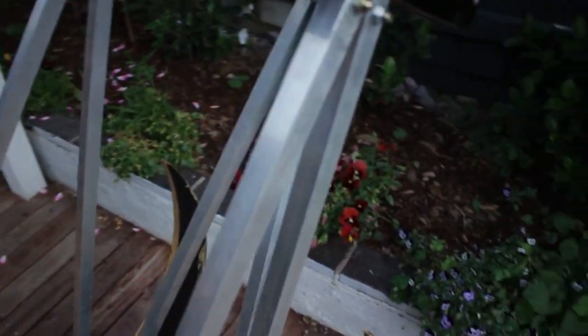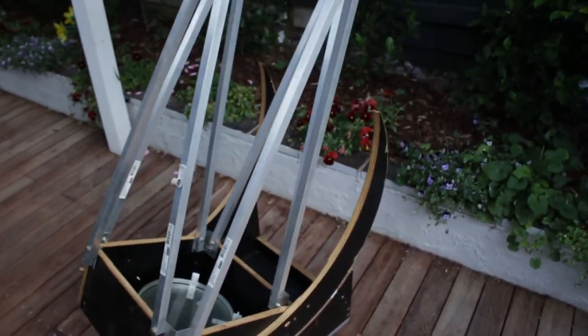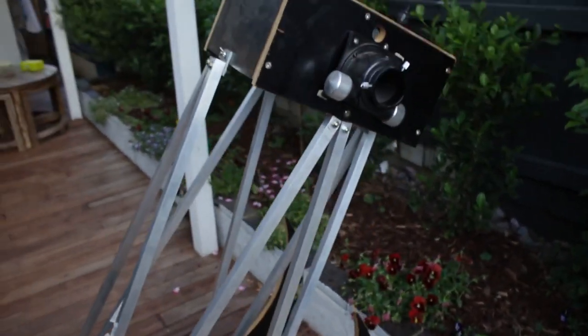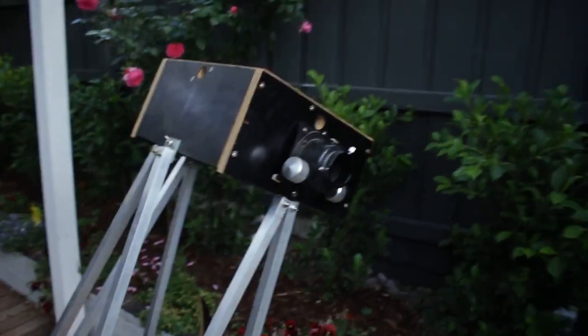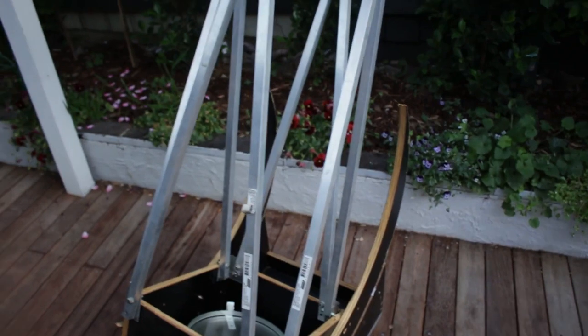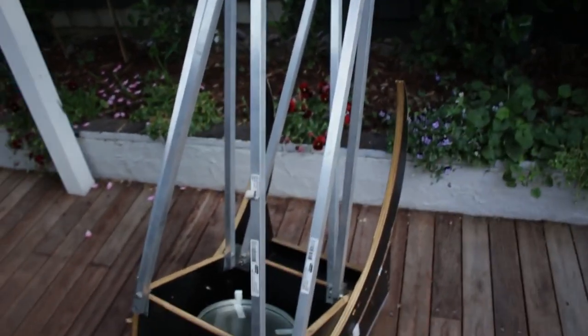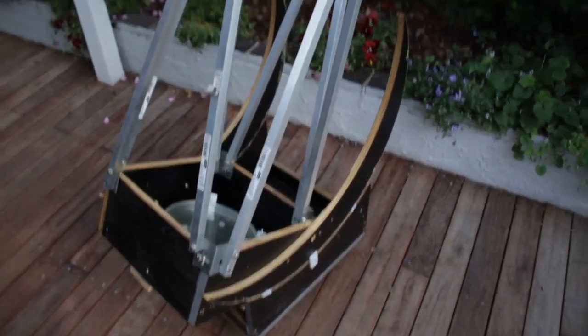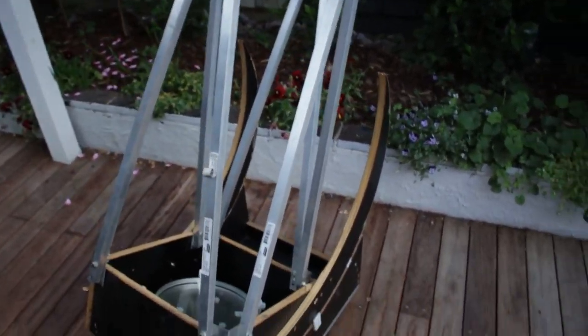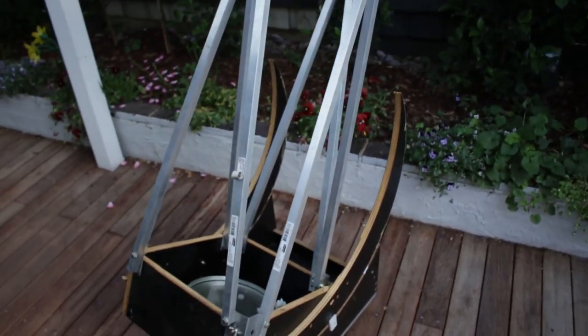Well, these are actually to make the scope much lighter than it normally would be. These allow you to break the scope down into very small pieces. Just the upper tube, the lower tube, and the rocker box. And with the truss poles, it makes it just so much easier to transport the telescope. Because, if you could imagine, this telescope would have been a whole solid tube, which makes it much harder to move around.